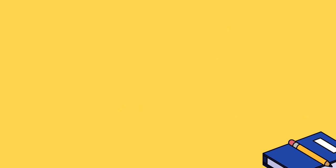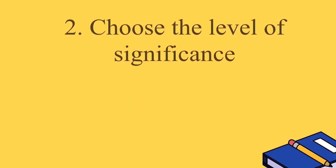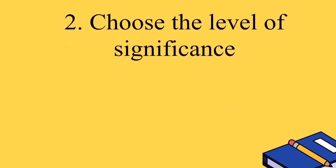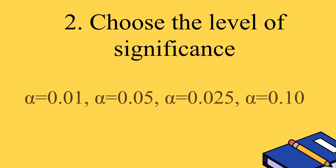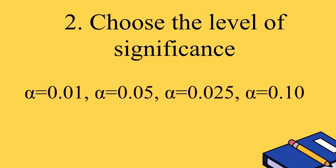The second step is to choose the level of significance. The common levels of significance are alpha equals 0.01, 0.05, 0.025, and 0.1.